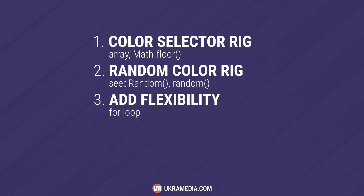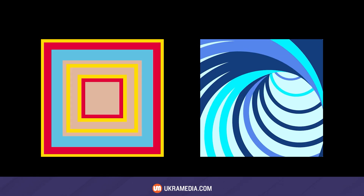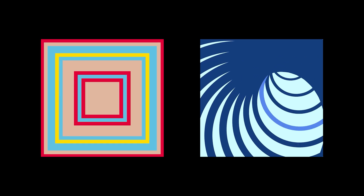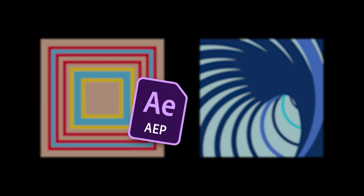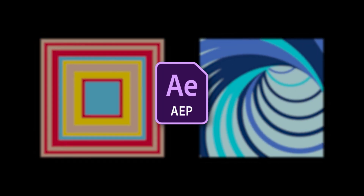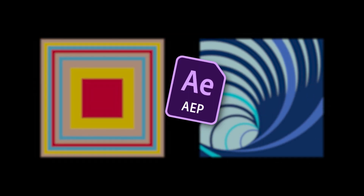Then we'll add some flexibility to the code using a for loop. And last we'll briefly go over how the dots that chase each other around the frame in the intro were made. Also, we won't actually be covering how to create the examples seen here beyond generating the random colors, but they are included in the free project file which you can download via the link in the description.